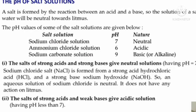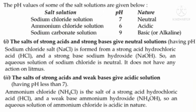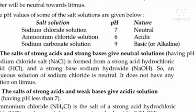The salts of strong acids and weak bases give acidic solutions. Ammonium chloride NH4Cl is the salt of strong acid hydrochloric acid HCl and the weak base ammonium hydroxide NH4OH. So an aqueous solution of ammonium chloride is acidic in nature. Strong acid HCl plus weak base ammonium hydroxide forms the acidic salt ammonium chloride.